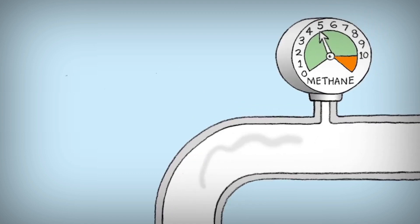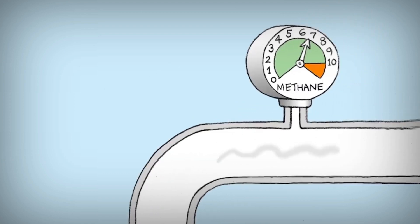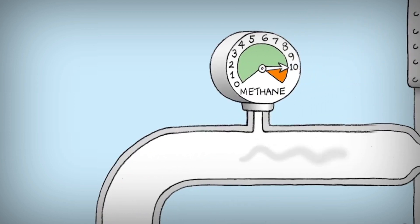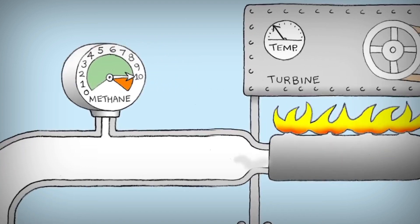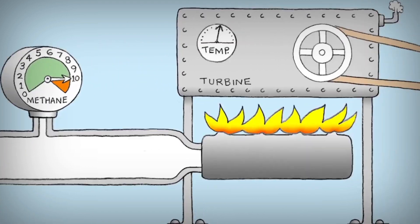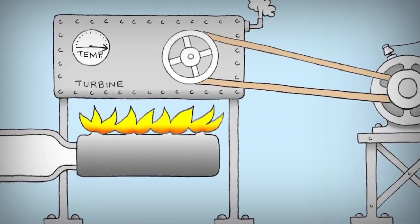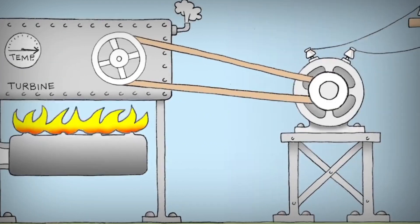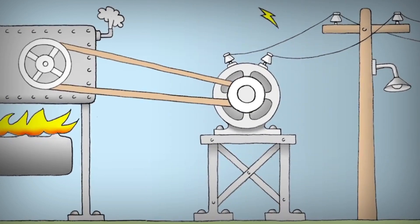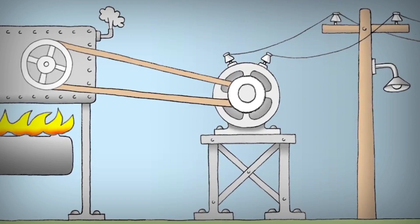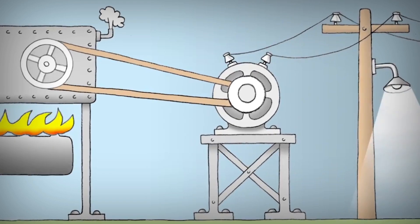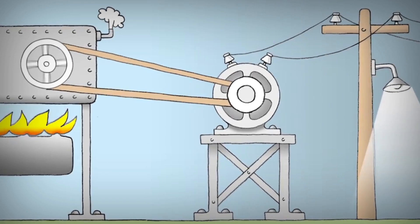Biogas is made up of mainly methane and carbon dioxide, with small amounts of water vapor, particulates, and other gases, such as hydrogen sulfide. Biogas can be processed and used for a variety of energy needs, such as the generation of heat, power, and fuel.